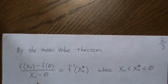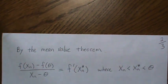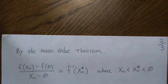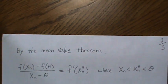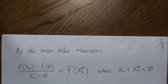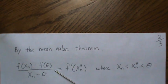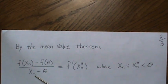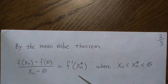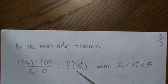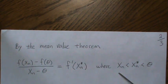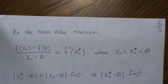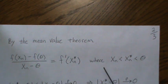Now by the mean value theorem we can set up the following. It's essentially a first-order Taylor approximation. The slope between g(X_n) and g(theta) — that difference — equals the derivative evaluated at some X*_n between the two endpoints X_n and theta.